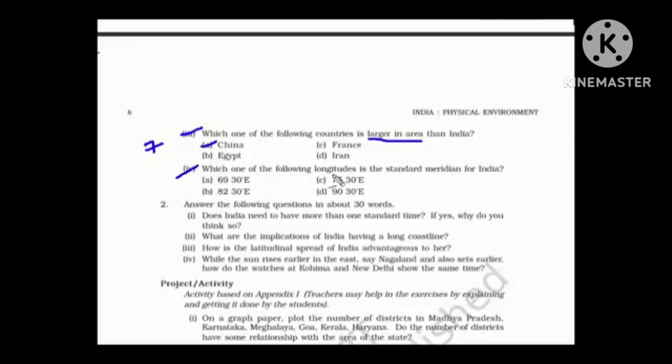Fourth question. Which one of the following longitudes is the standard meridian of India? The answer is 82.30 degree east and this passes through Allahabad.